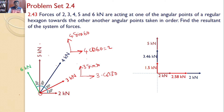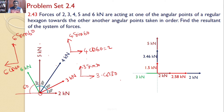The 6 kilonewton force acts in the second quadrant, making an angle of 60 degrees with the horizontal. Resolving it, the horizontal component is 6 cos 60 = 3 kilonewtons acting in the negative x direction, and the vertical component is 6 sin 60 = 5.19 kilonewtons. So all five forces are now resolved along the x-axis and y-axis.